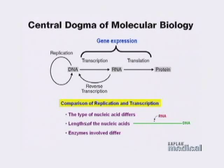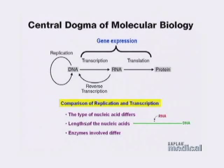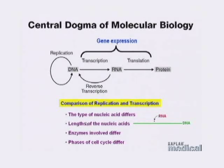The next thing that's going to be different between these two are the enzymes involved. There's going to be DNA polymerases and there are going to be RNA polymerases. The DNA polymerases are going to be important for synthesizing deoxyribonucleic acid. The RNA polymerases are going to be necessary for synthesizing ribonucleic acid, and there are actually going to be different polymerases that exist for making different types of RNA. Finally, the phases of the cell cycle where replication versus transcription occur are going to be different. Replication is going to take place during the S, or synthesis, phase of the cell cycle. Transcription is going to happen throughout all phases of the cell cycle, with one exception — during mitosis, when the cells are separating the sister chromatids prior to cell division.